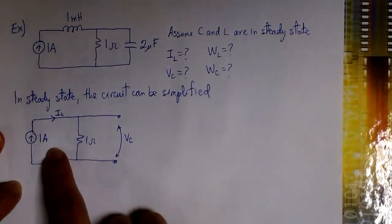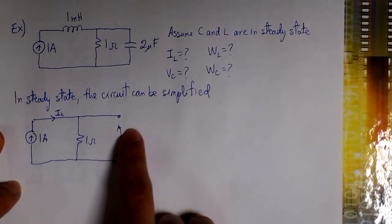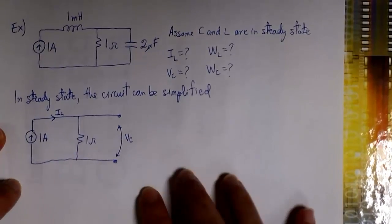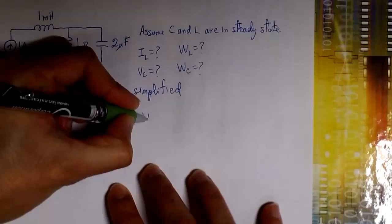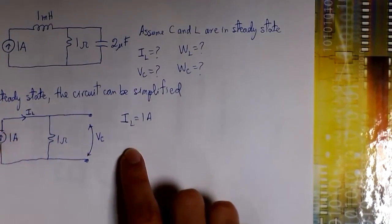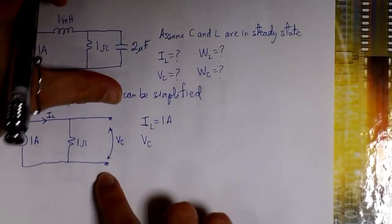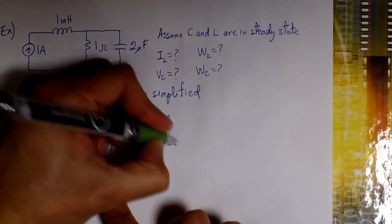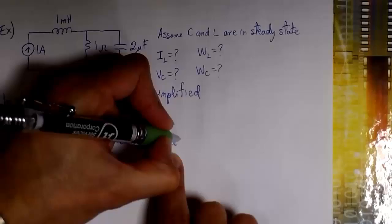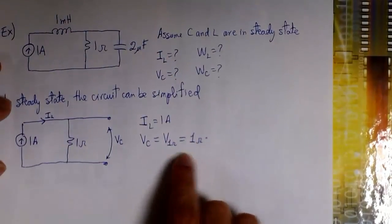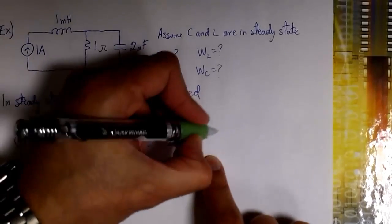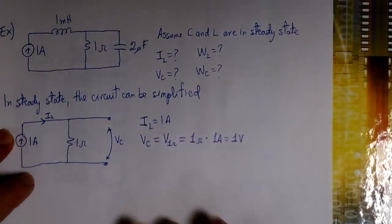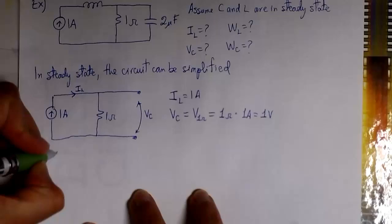We are going to find IL and VC. In this case we only have just one loop and we know the current is 1 amp, so IL is just 1 amp given by the source. For VC, the voltage between the terminals of C in steady state is the same voltage between the terminals of the resistance. So we get 1 ohm times 1 amp and we get 1 volt. That's the value of the voltage across C under steady state conditions.